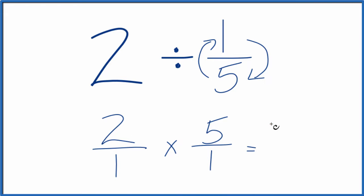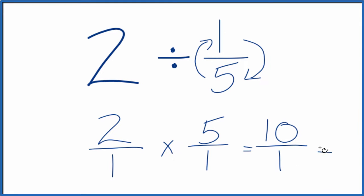So 2 times 5 is 10, and 1 times 1 is 1. So we have 10 over 1, and that's just 10.